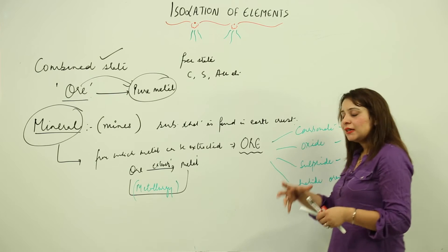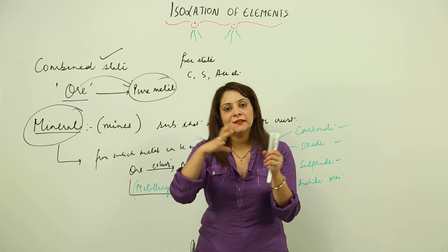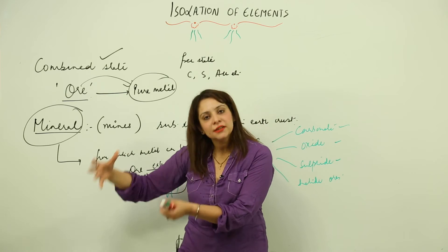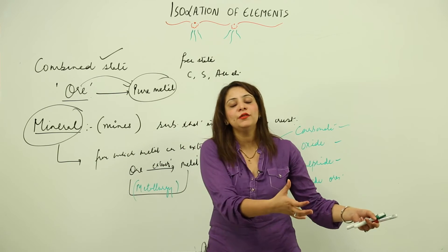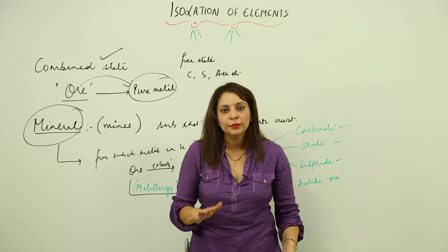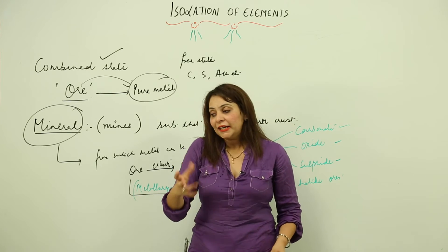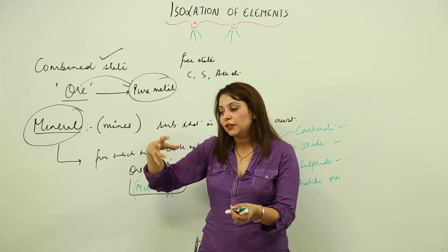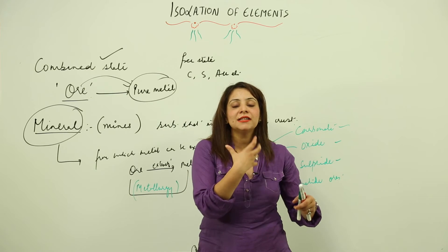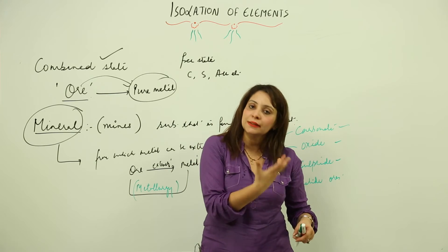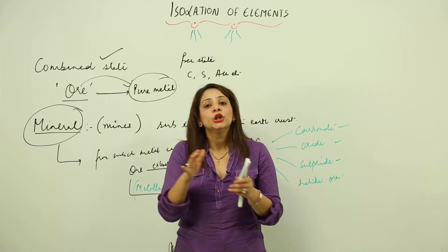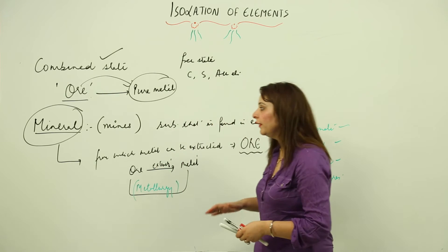When we look at the earth crust, in certain areas we find a certain type of ore, and in other areas we find different ones. That means the ore distribution is not uniform. Some regions of the earth crust are rich in certain metals, while others are rich in different metals.